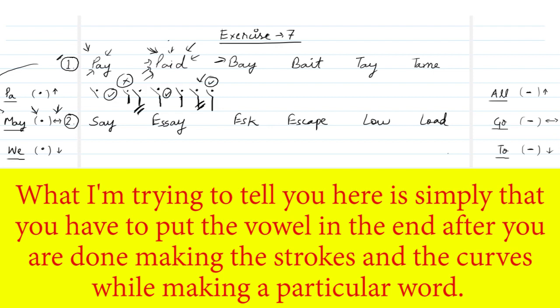Let's move to the next word, 'bay'. Again we have the 'a' vowel sound. First we make the 'b' character like this, then we put a high dot for the 'a' vowel. That's our word 'bay'. Next we have 'bait'. Again 'b', then the 'a' vowel, then we have the additional 't'. So first 'b', then the high dot, then attach 't' which is a light stroke. This is our word 'bait'.